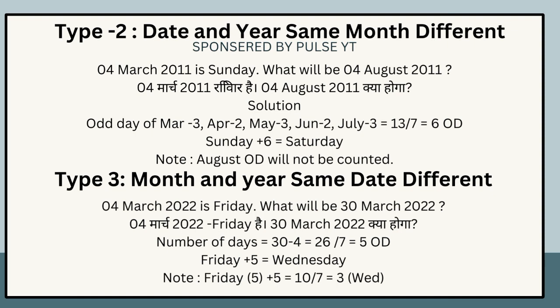Type 3 — Same month and year, different date. The 4th of March 2022 is Friday; what will be the 30th of March 2022? Number of days = 30 − 4 = 26. 26 ÷ 7 = remainder 5 odd days. Friday + 5 = Wednesday. Note: Friday is day 6; 6 + 5 = 11; 11 ÷ 7 = remainder 4, which is Wednesday.